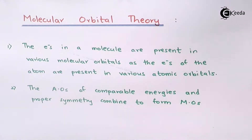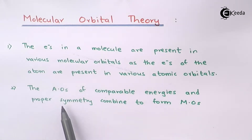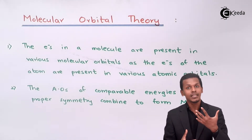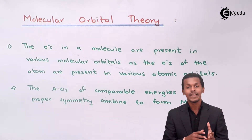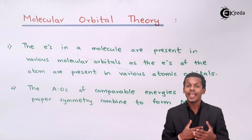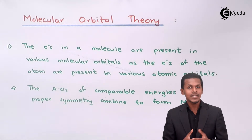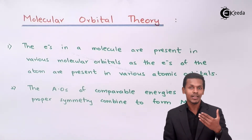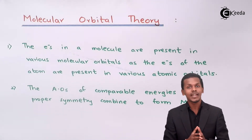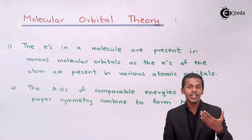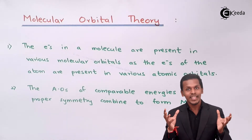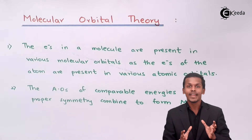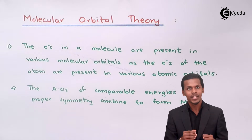The second postulate states that atomic orbitals of comparable energies and proper symmetry combine to form molecular orbitals. We know electrons are present in various orbits divided into orbitals, each with a particular energy level. When two atomic orbitals combine to form a molecule, they must have almost the same energy — only then will they combine. The symmetry is sustained and that is how two atoms combine to form a molecule.